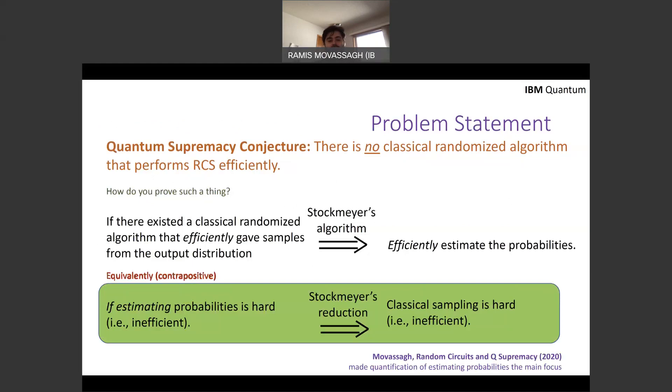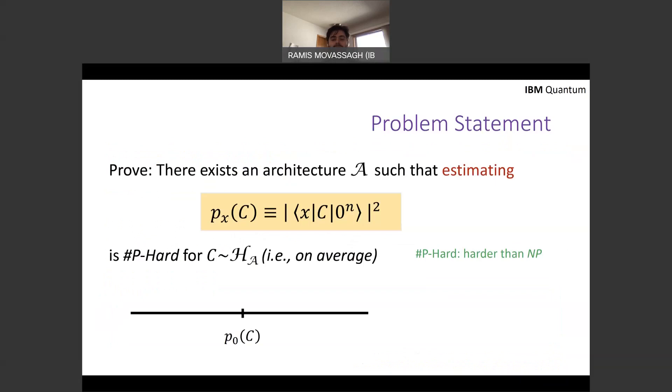Now, in this earlier work MOV20, the conversation was changed by looking at the contrapositive statement. So instead of trying to prove the actual sampling hardness, you can focus on the hardness of estimating probabilities. So some quantifiable fine-grained analysis of hardness of probabilities. So the contrapositive says that if estimating probabilities is hard, then classical sampling is hard by Stockmeyer's reduction.